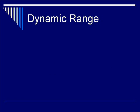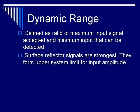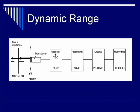The definition of dynamic range is the ratio of the maximum input signal over the minimum input signal that can be detected. Surface reflectors typically give out very strong signals, forming the upper limit for input amplitude. On the other hand, deep reflectors give out very weak signals — sometimes requiring amplification up to 1,000 times just to be detected — and are compromised by noise from the transmission cable as well as the low noise amplifier. In terms of system components, the receiver has a very high dynamic range up to 89 dB, whereas displays and recorders typically have a much lower dynamic range of 20 to 40 dB.